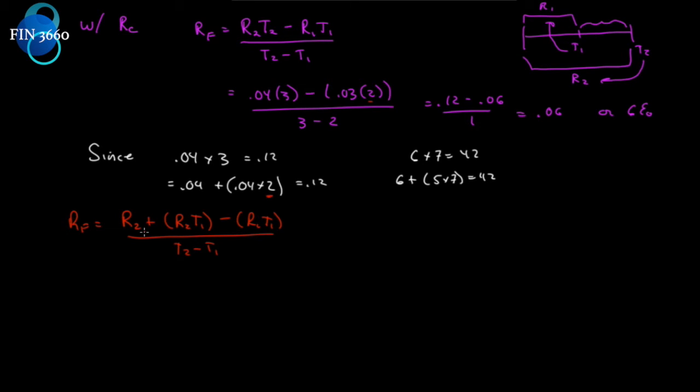So, you're starting to see how we got the first term out, right? Well, look, we have a common term here, T1. So, we can rewrite the forward rate as R2 plus R2 minus R1 times T1 over T2 minus T1. But R2 plus R2 minus R1 times T1 over this denominator is the same as writing R2 plus (R2 minus R1) over 1 times T1 over T2 minus T1.